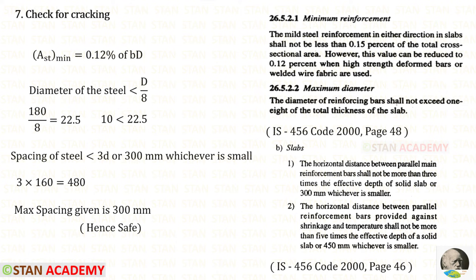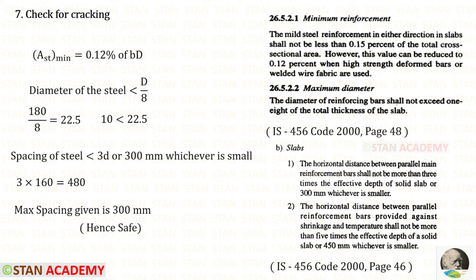Now we apply the check for cracking. First, minimum area in both directions has already been verified. Second, bar diameter must not exceed D/8 = 180/8 = 22.5 mm; our 10 mm bars are safe. Third, spacing must not exceed 3 times the effective depth or 300 mm, whichever is smaller: 3 × 160 = 480 mm. Maximum spacing provided is 300 mm, which is within limits. Safe.